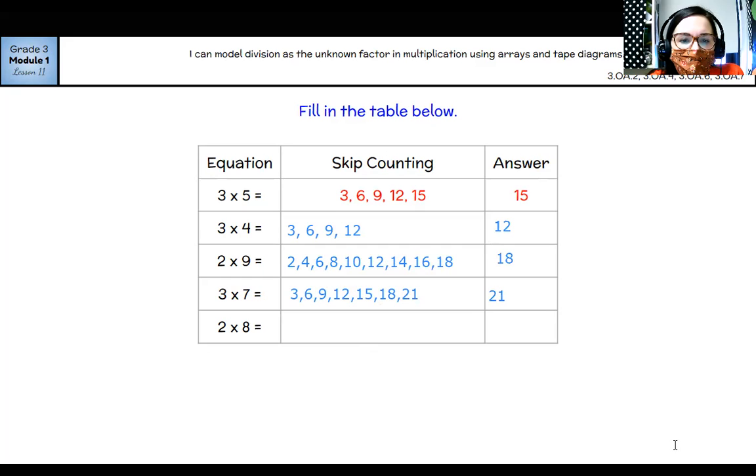And last but not least, two times eight. So skip count by twos eight times: two, four, six, eight, 10, 12, 14, 16. One, two, three, four, five, six, seven, eight. So two times eight makes 16.